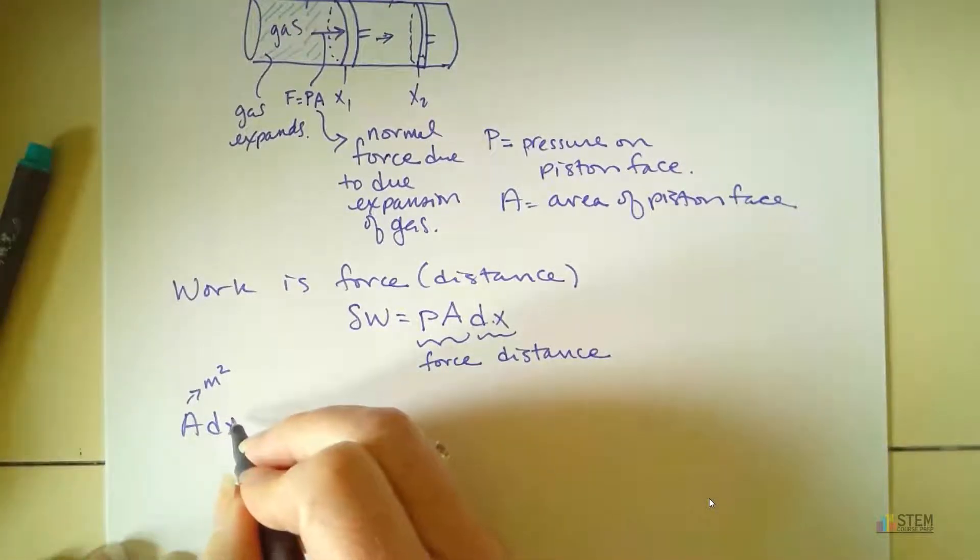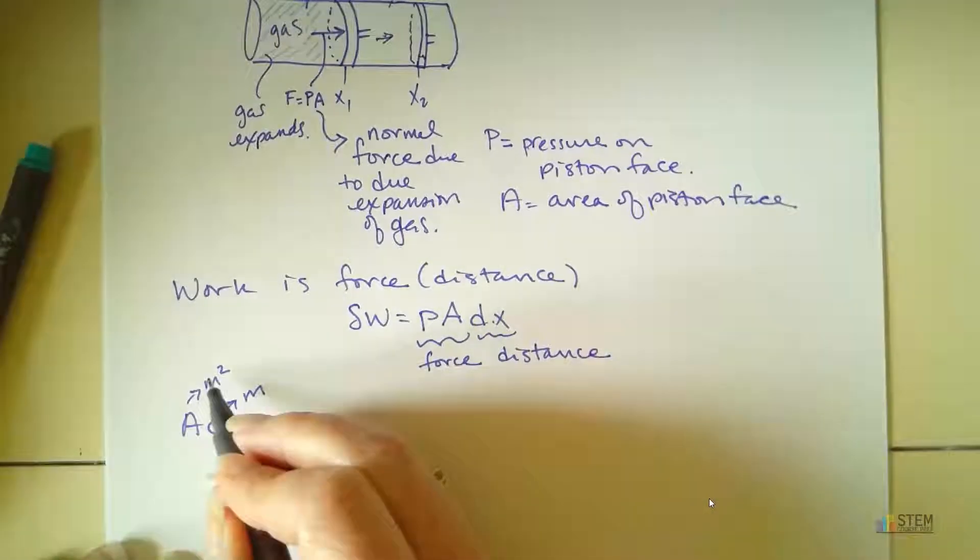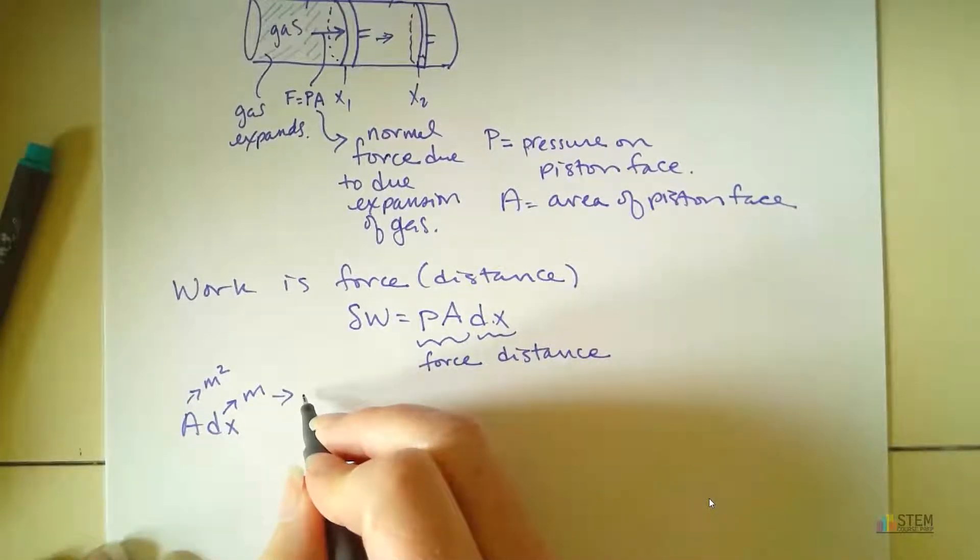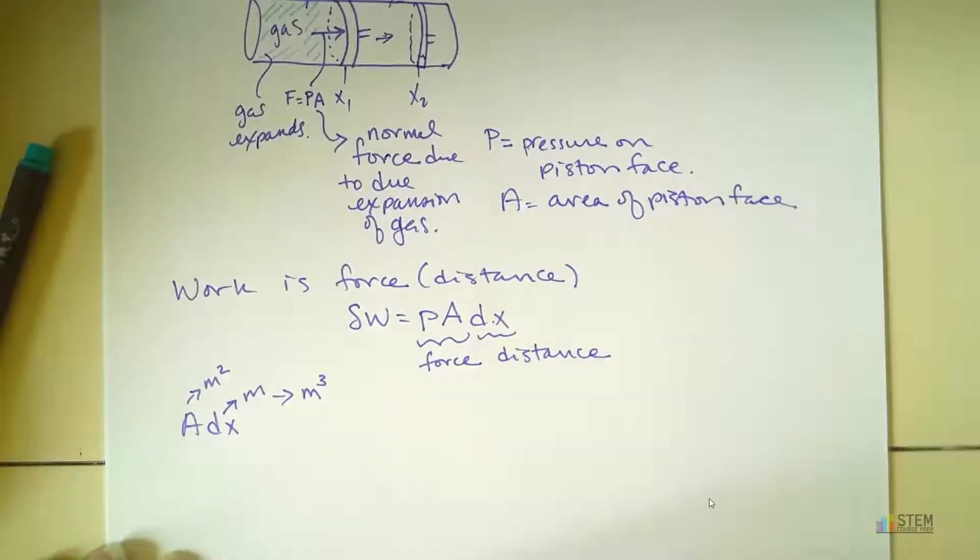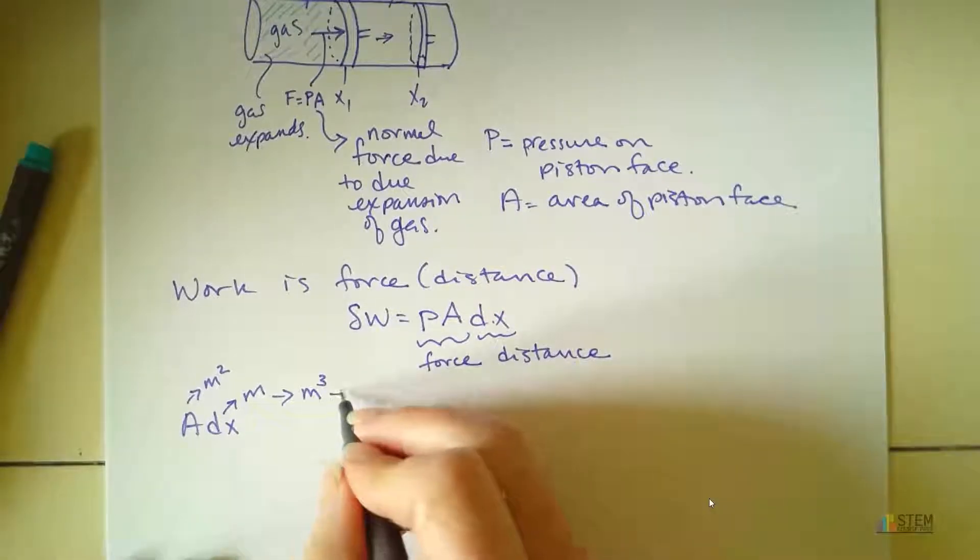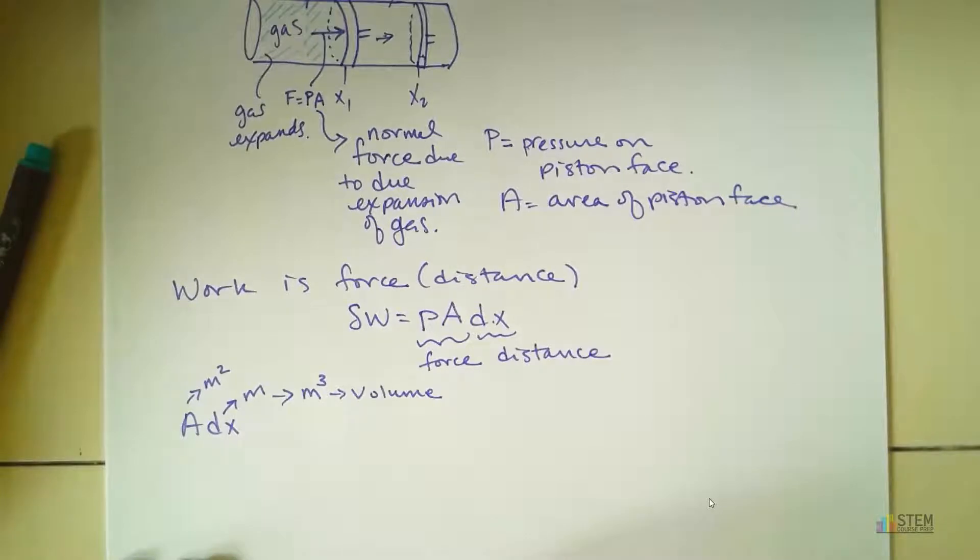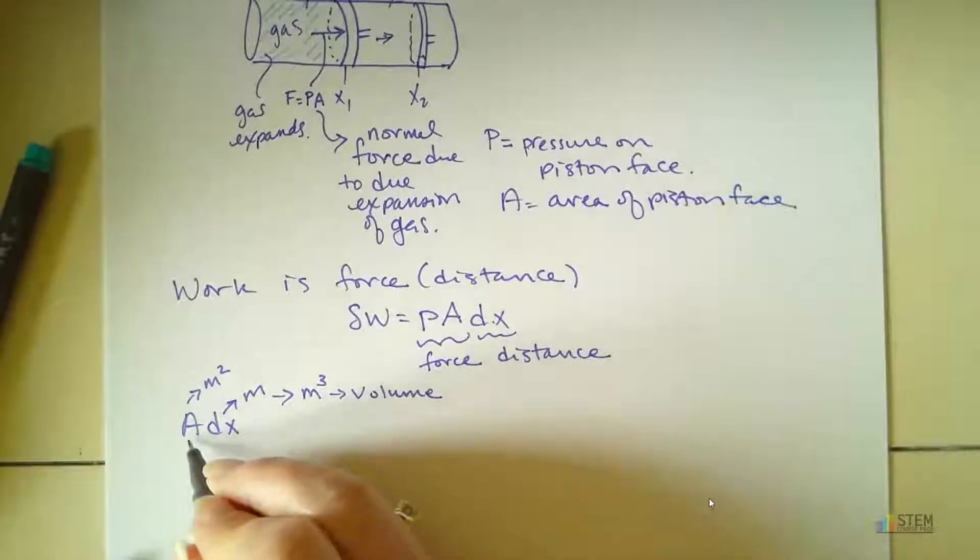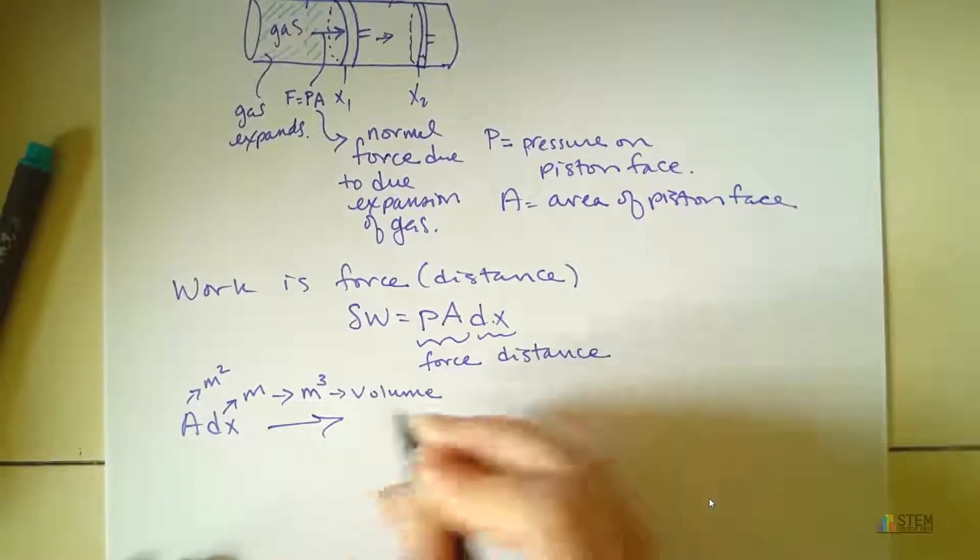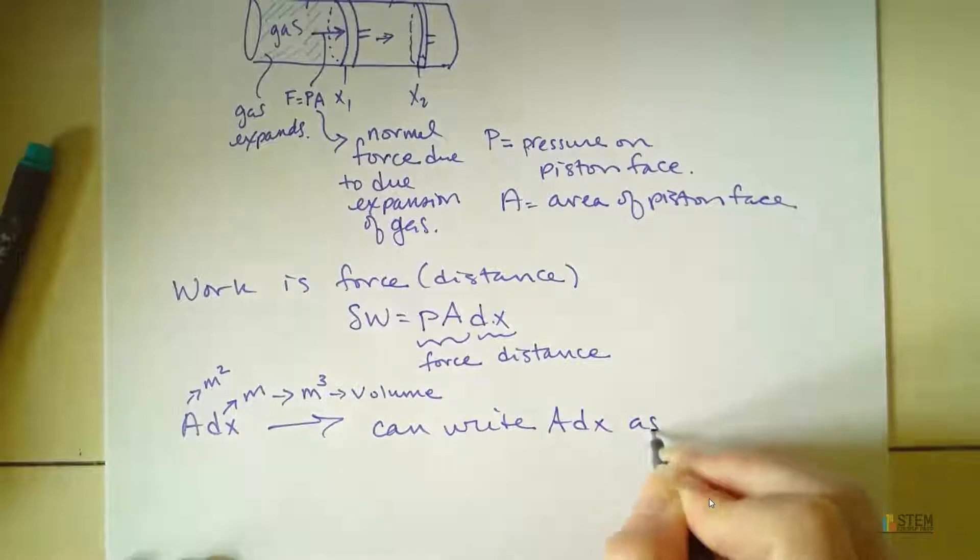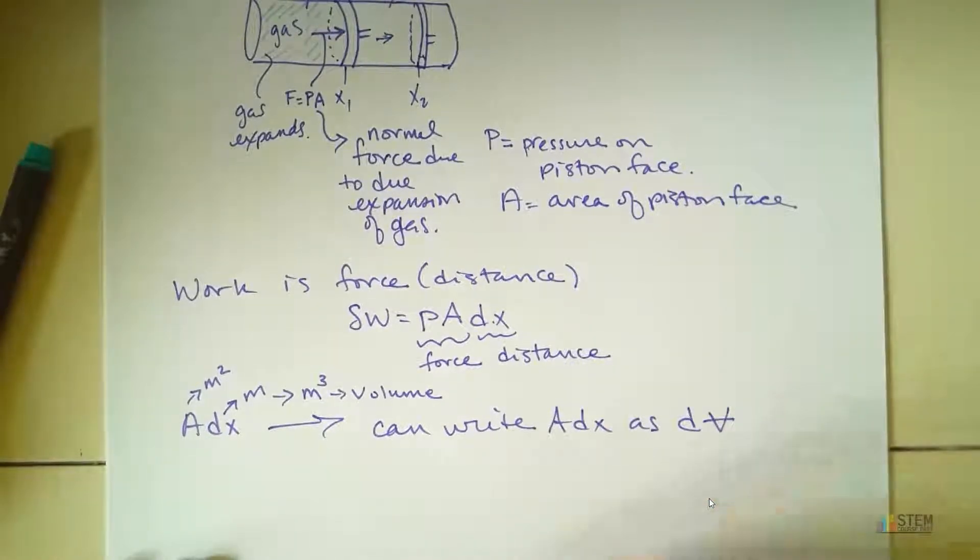DX, remember X is a distance. This is just a change in distance. So units for that would be meters. Now if you put those together, when you multiply them, what do you get? Yep. You get cubic meters. Now what units go with cubic meters? What is that? That's volume, right? So that means we can write ADX as DV, where V is volume.